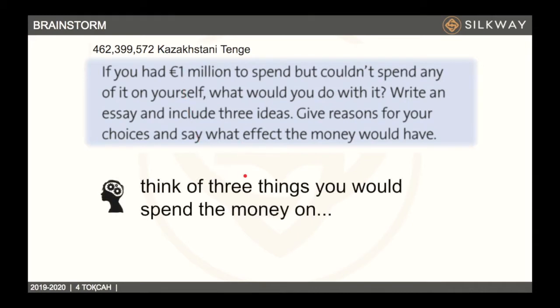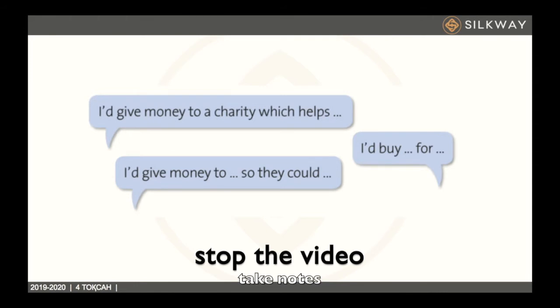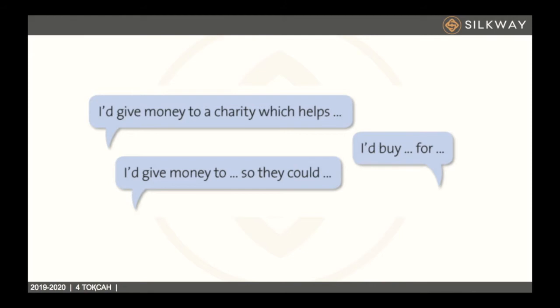Now think of three things you would spend the money on. You can pause this video, take notes, and come back after you have your answers. Use second conditionals since these are all imaginary situations. For example: 'I'd give money to a charity which helps people who are ill,' 'I'd buy a present for my brother or mother,' or 'I'd give money to people who need it so they could afford a better life.' Please write your answers in the comments section.